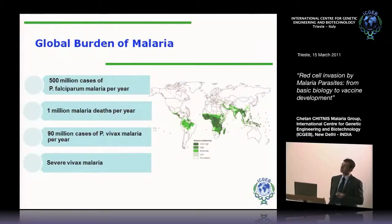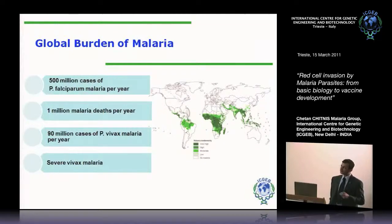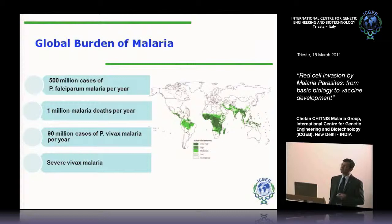In addition to falciparum, there's also another parasite species, a Plasmodium species that causes significant human malaria, and that's Plasmodium vivax, and there are about 90 million cases of vivax malaria. It has so far been thought, because falciparum leads to death, vivax was thought of as a more benign form of malaria, but as investigations more recently have shown, vivax can also lead to severe disease and could actually also contribute to significant deaths.